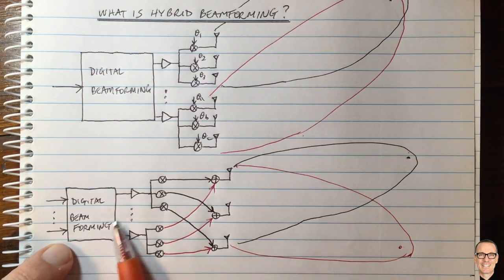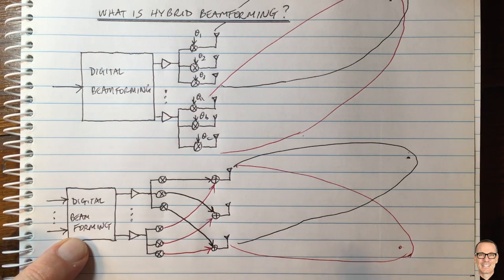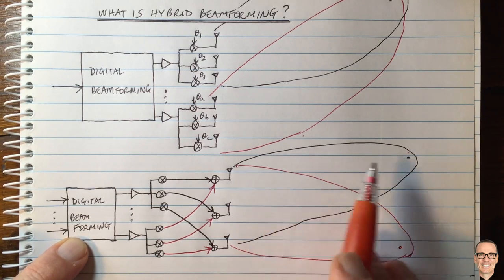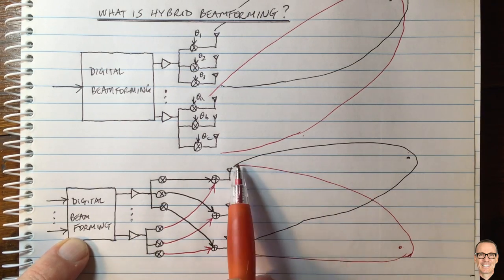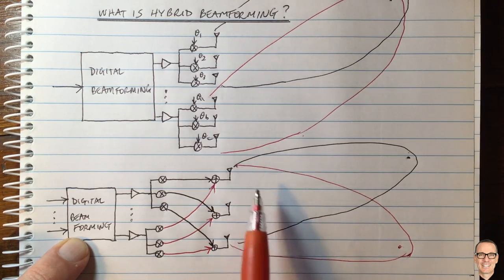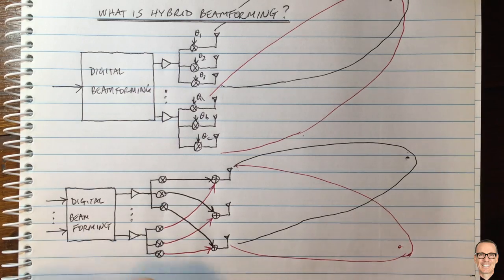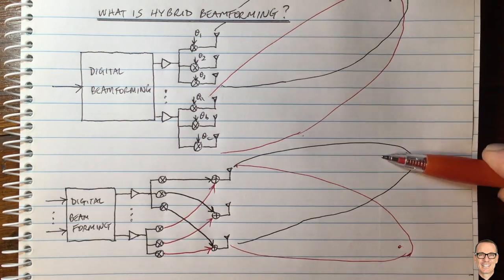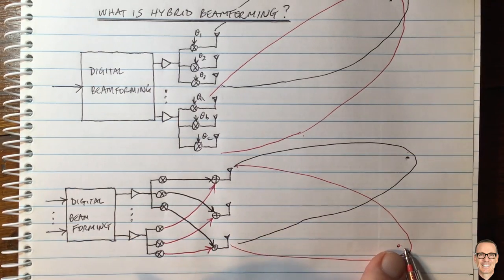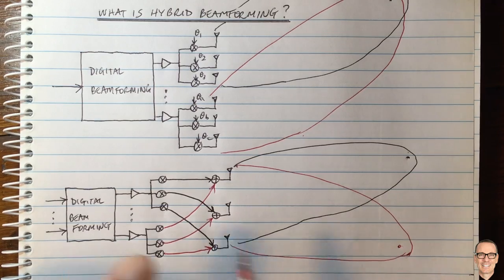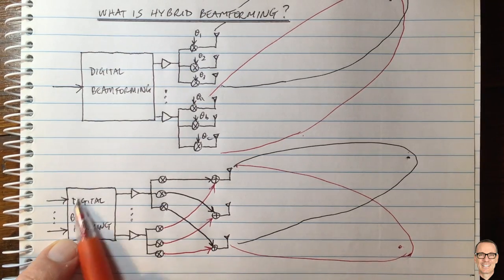And of course still you want to be doing digital beamforming because what you would like to have is a null from the red beam steered in the direction of the black user, and from the black user's beam you would like there to be a null in the direction of the red user. And to achieve that you need to do that in the digital beamforming.